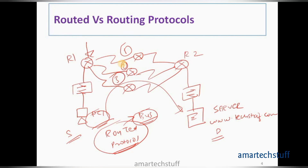So this is the difference between a routed protocol and a routing protocol. Routed protocols actually carry data across the network — examples include IP and IPX. Routing protocols tell the routers which path to select — examples include RIP, OSPF, EIGRP, and BGP.